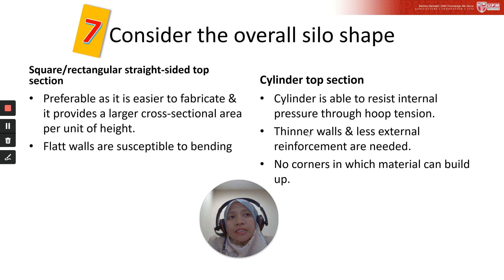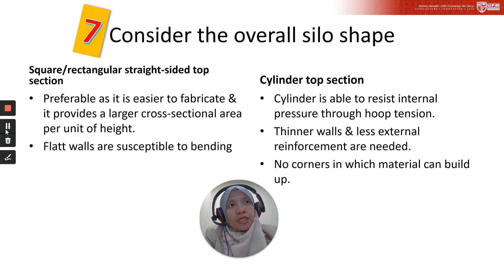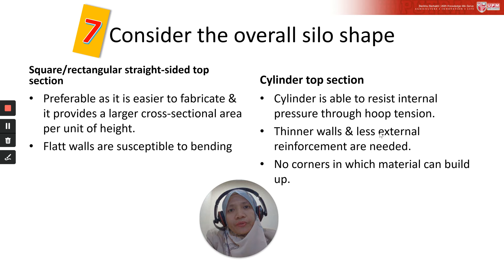However, material flow and structural issues also need to be considered. Flat walls are susceptible to bending, whereas a cylinder is able to resist internal pressure through hoop tension. This means we can have a thinner wall and less external reinforcement is needed for circular cross-sections, which reduces the cost of fabrication.